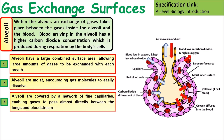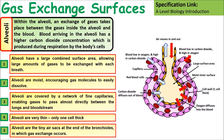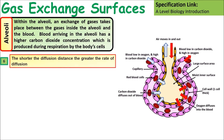The alveoli are covered in a network of fine capillaries, enabling a good blood supply which helps maintain the concentration gradient. Alveoli are only one cell thick, meaning there is a short diffusion distance. It's important to remember that alveoli are tiny air sacs at the end of the bronchioles. Because there is a short diffusion distance, that increases the rate of diffusion.